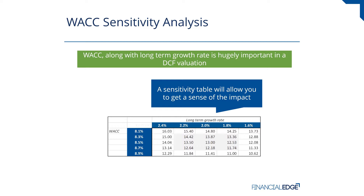What you do is set up your data table like this — a column on the left and a row at the top. You then tell the data table which two cells in the model are your WACC and your long-term growth rate. You then run your data table, and all of a sudden all of your share prices spit out.